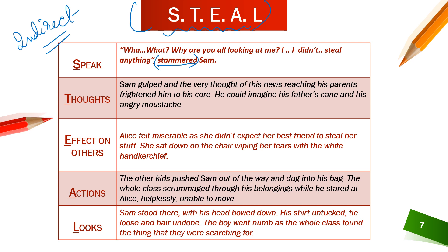For E — Effect on others: 'Alice felt miserable as she didn't expect her best friend to steal her stuff. She sat down on the chair, wiping her tears with a white handkerchief.' This shows the effect of Sam's behavior on Alice. For A — Actions: 'The other kids pushed Sam out of the way and dug into his bag. The whole class scrummaged through his belongings while he stared at Alice helplessly, unable to move.' This suggests a theft, and everyone is searching Sam's bag.